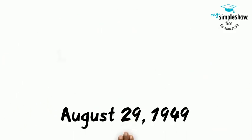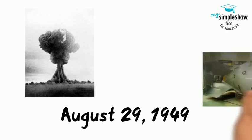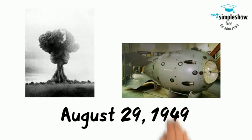On August 29, 1949, the Soviets detonated their first atomic bomb in Kazakhstan under the name First Lightning. It was an implosion bomb like Fat Man and measured at 20 kilotons. The Cold War had suddenly taken on a new level of danger and possible global destruction.